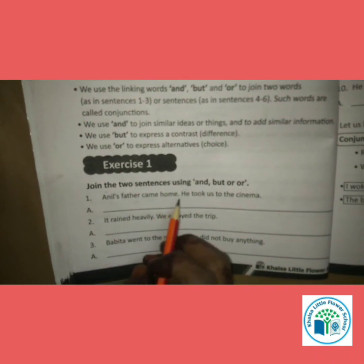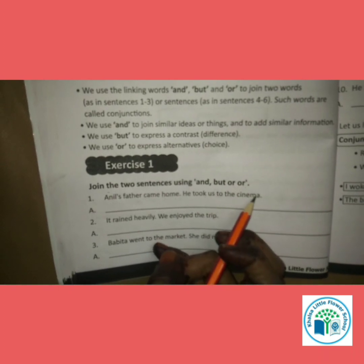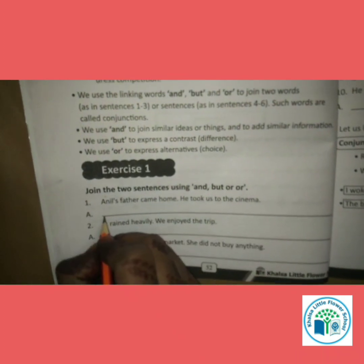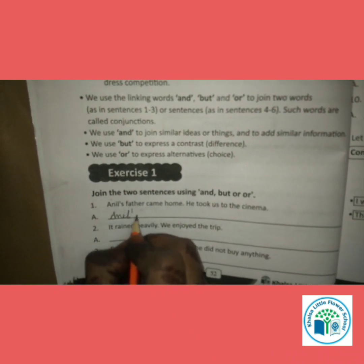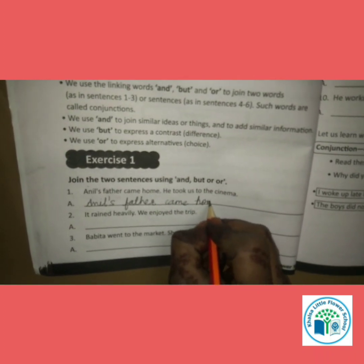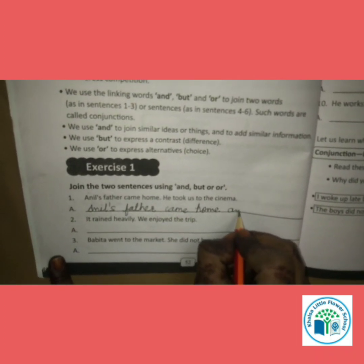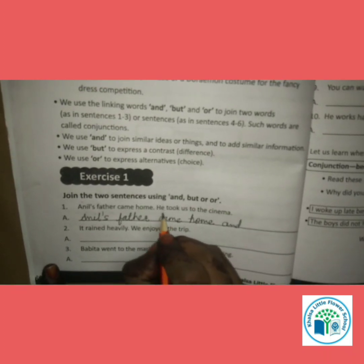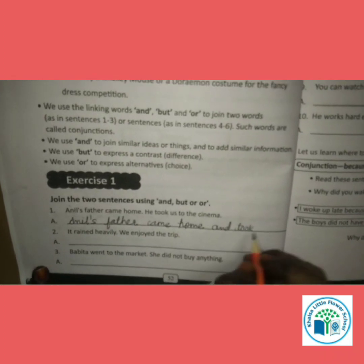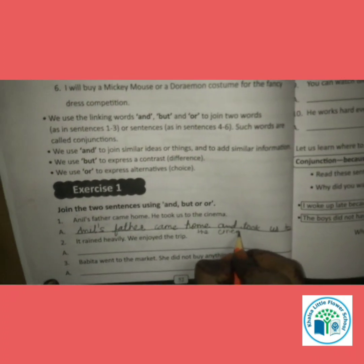Question 1: Anil's father came home. He took us to the cinema. Anil ke papa ghar pe aaye aur humko cinema le gaye — similar information hai, so we use 'and'. Answer: Anil's father came home and took us to the cinema.